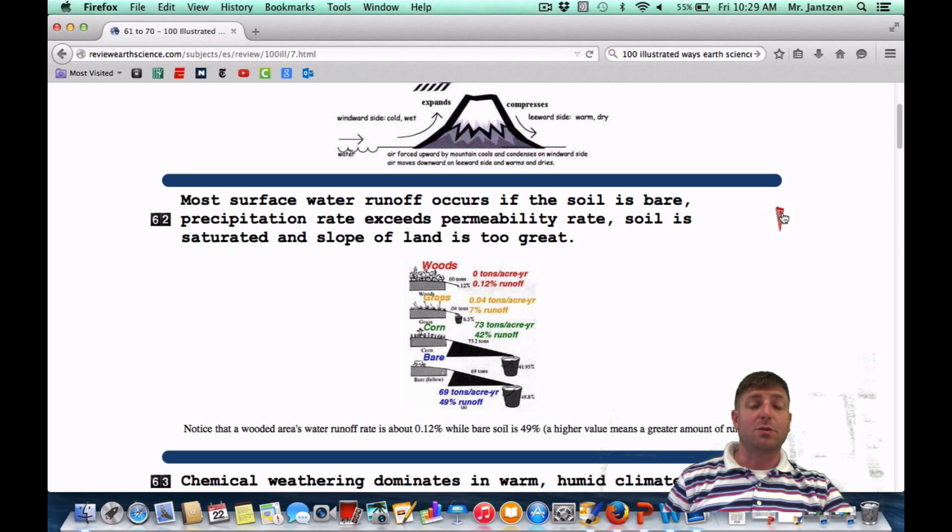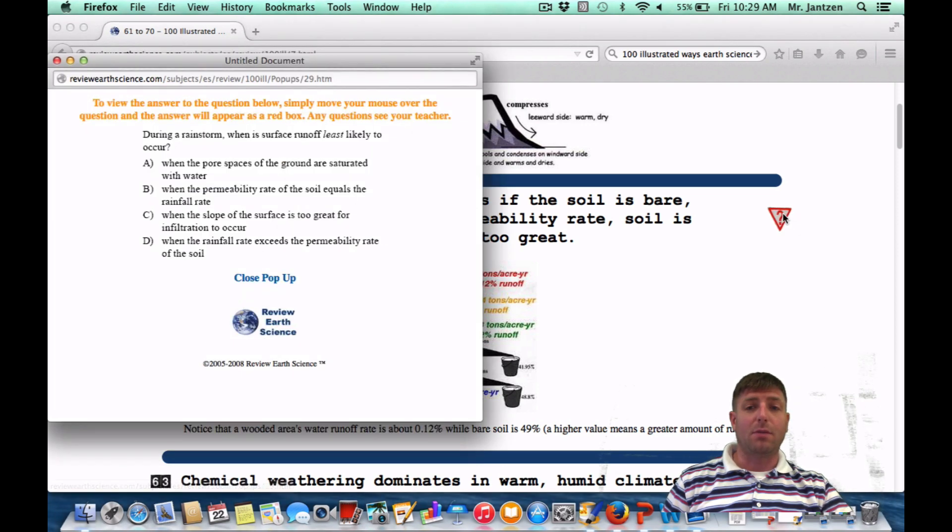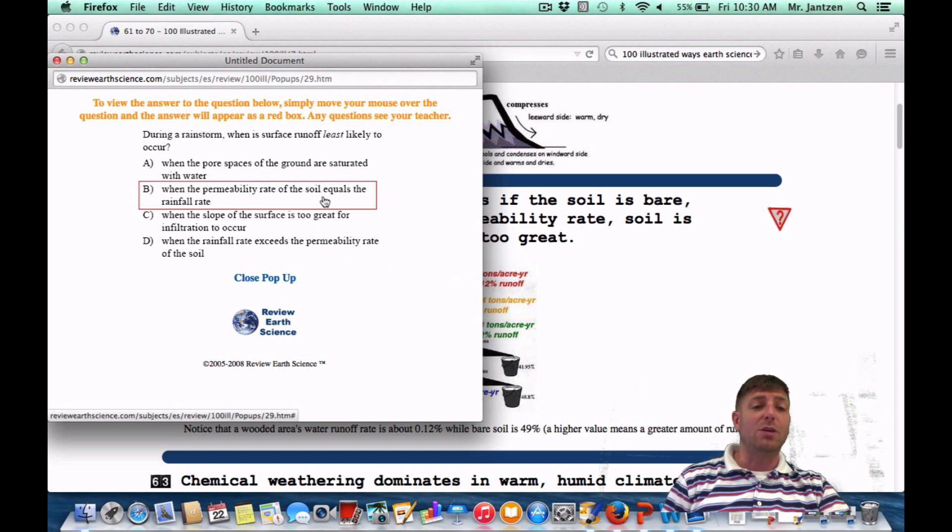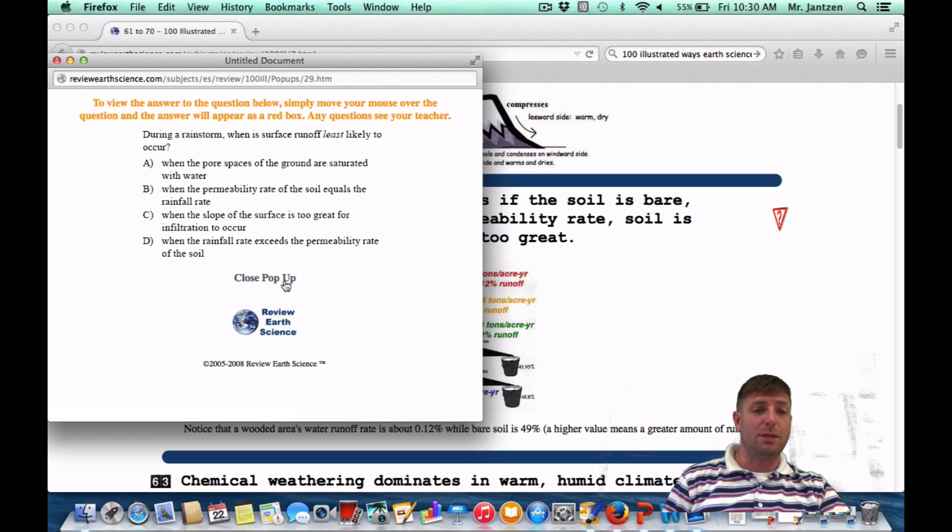If you're going to see this as a regions question, it may appear like this: During a rainstorm, when is surface runoff least likely to occur? Least likely to occur means it's going into the ground. That's going to be when the permeability rate of the soil equals the rainfall rate, or choice B.